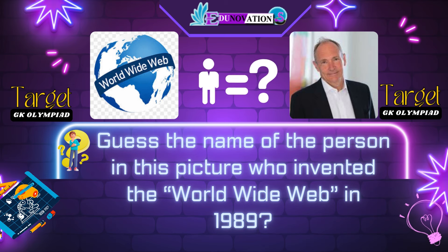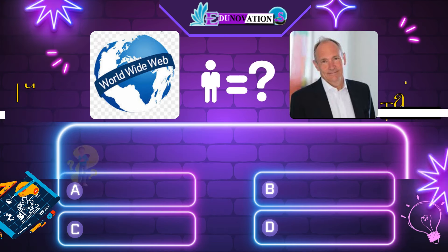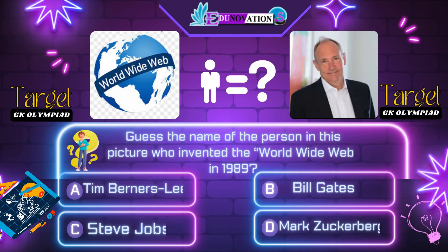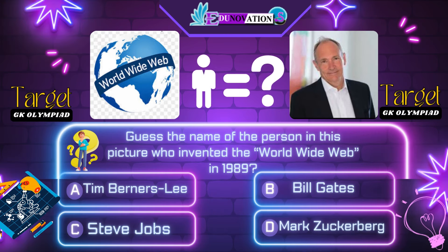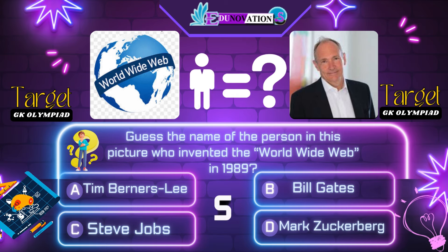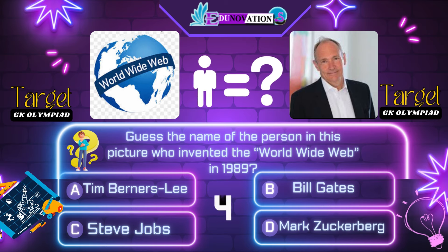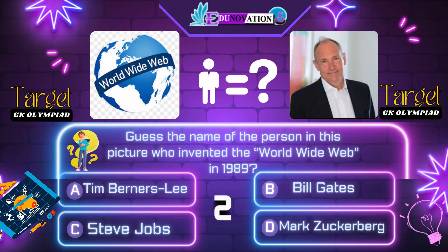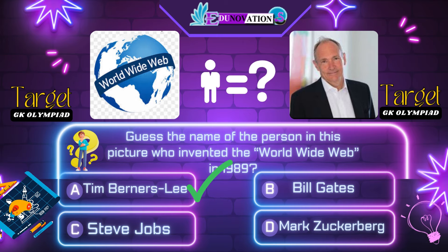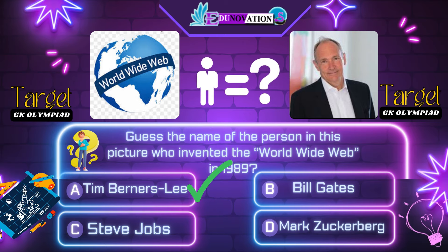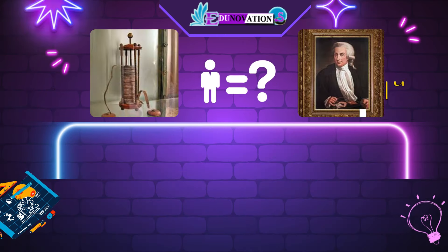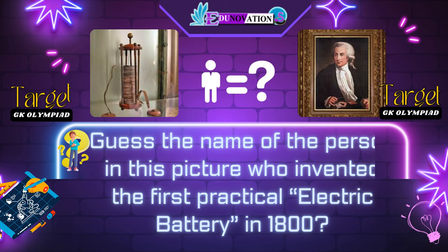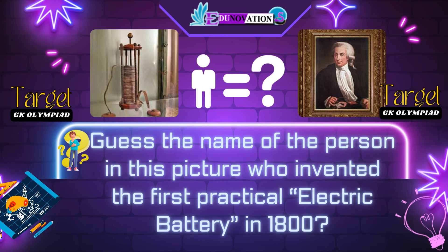Next question. Guess the name of the person in this picture who invented the World Wide Web in 1989. Your options are: A. Tim Berners-Lee, B. Bill Gates, C. Steve Jobs, D. Mark Zuckerberg. Time's up. Correct answer is A. Tim Berners-Lee.